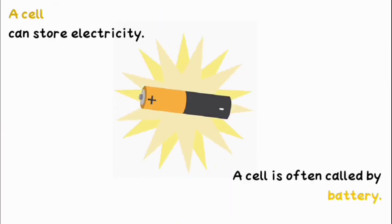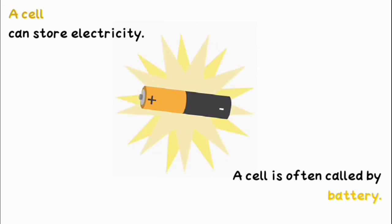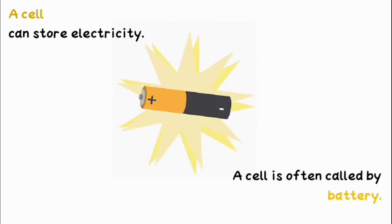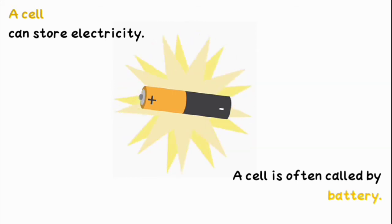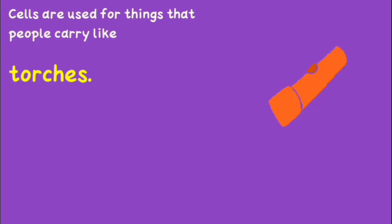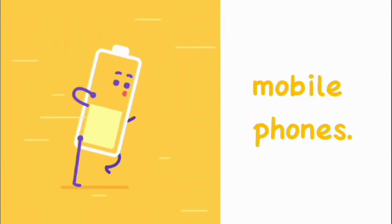A cell can store electricity. A cell is often called a battery. Cells are used for things that people carry, like torches or mobile phones.